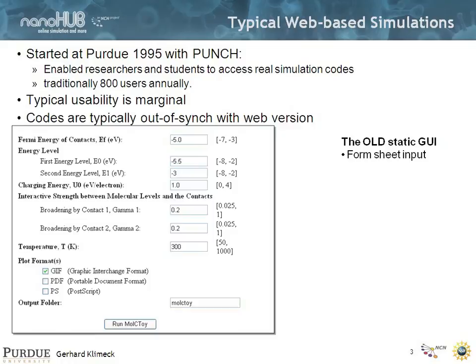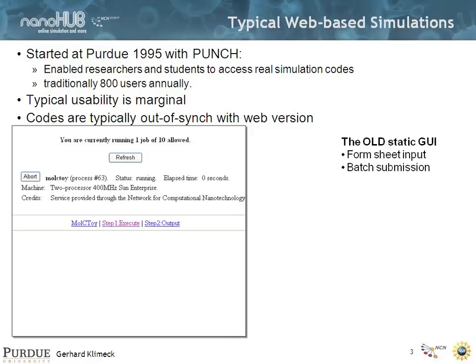I want to put this into contrast with what most people consider web development or web deployment of tools. We had done this — we started at Purdue in 1995 with a system called PUNCH, the Purdue University Network Computing Hub. It was developed at a time when there wasn't even an Apache web server available, so they had to write their own. They developed these forms where you can hook in tools and launch them on remote Unix machines — quite fancy at the time. The way it works is you fill in this web form and submit a run.